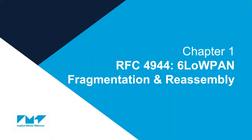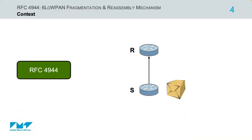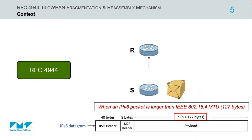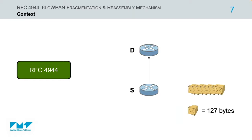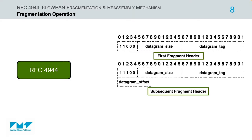I will proceed with the first chapter on 6LoWPAN per-hop fragmentation and reassembly. As specified in RFC 4944, when a compressed IPv6 datagram does not fit within a single IEEE 802.15.4 MTU — which is 127 bytes — fragmentation is required to split large IPv6 datagrams into multiple link-layer fragments, each equal to 127 bytes.